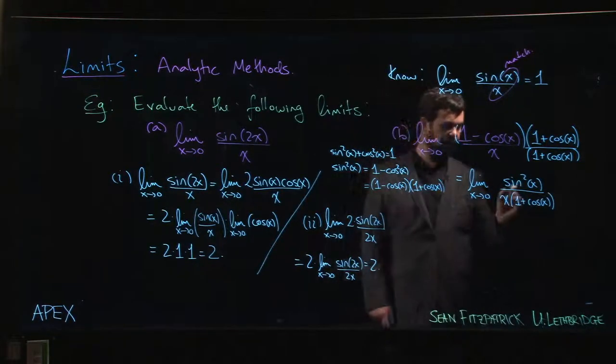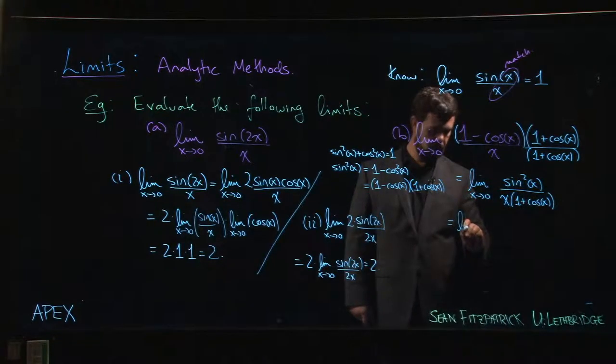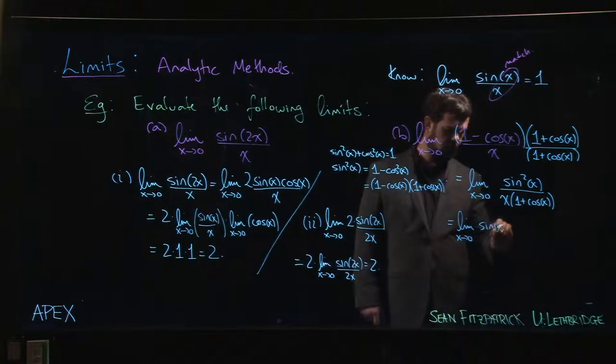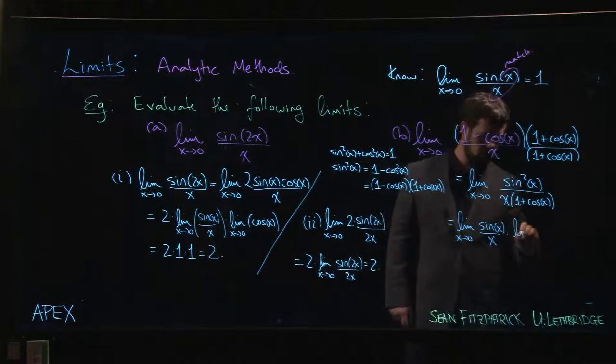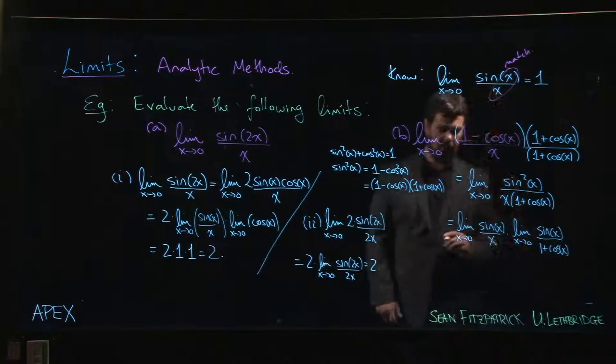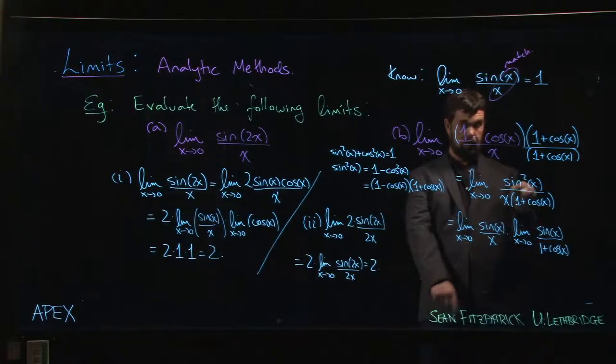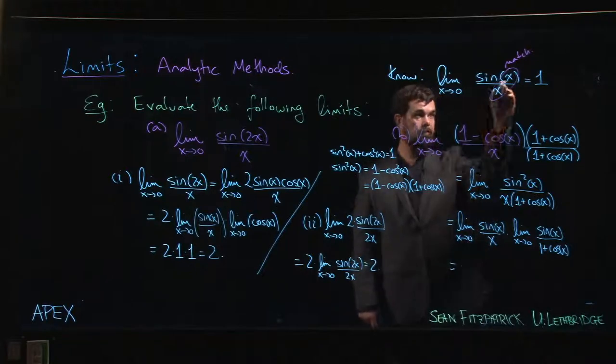Now I'm going to break this up into two pieces. Sine squared is sine x times sine x. So I can write this as the limit, x goes to 0, sin x over x times the limit as x goes to 0, sin x over 1 plus cos x. So if I combine that into a single limit, I multiply things together, I'm back to here. So these are equal.